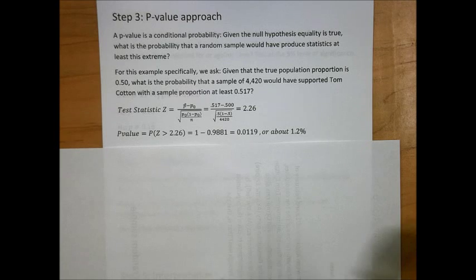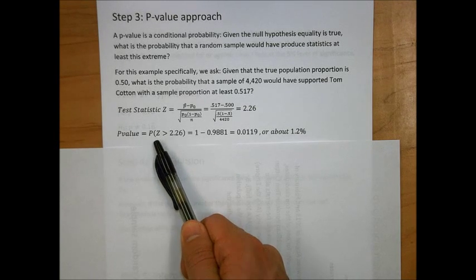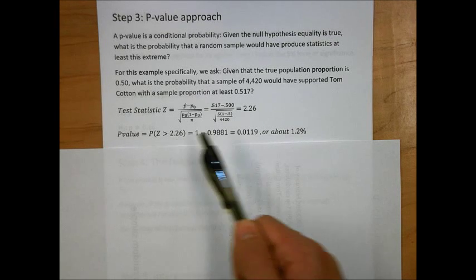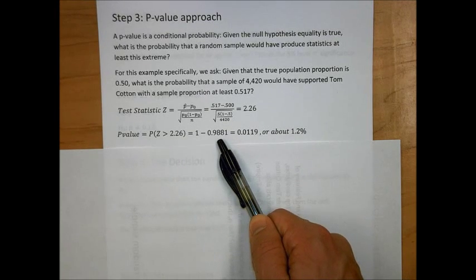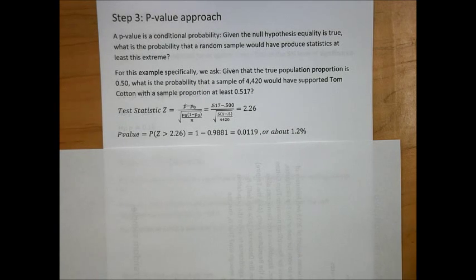The p-value is then calculated as the probability that a standard normal variable z would be greater than the test statistic we just got. It's like saying the probability of getting something as extreme as we just got in the data, given the null hypothesis is actually true. In this case, if we remember how to find standard normal probabilities, we can use our textbooks, and we'll get about 1.2% for our p-value.